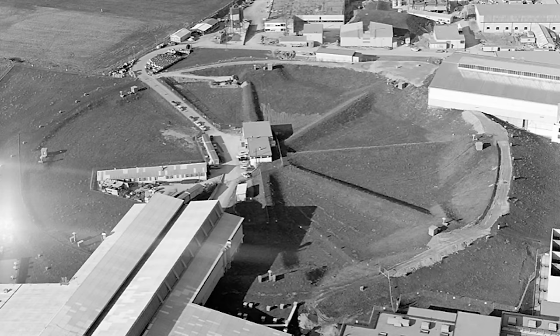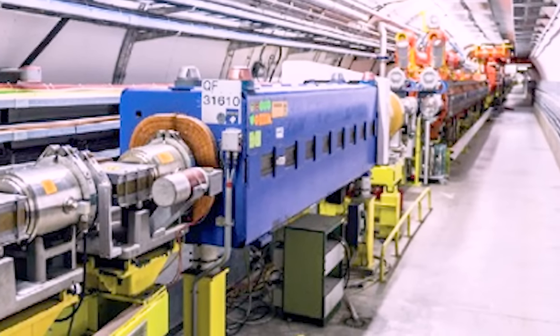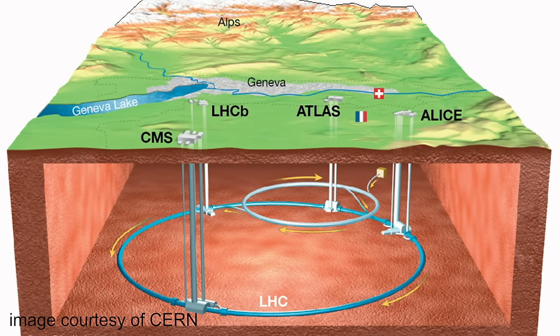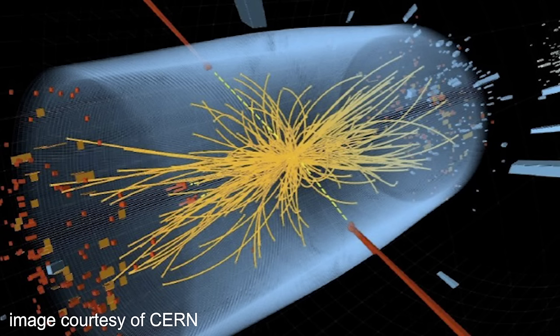Then came the proton synchrotron in 1959, the super proton synchrotron in 1976, and the electron-positron collider, and of course the LHC, the Large Hadron Collider, which was instrumental in providing evidence for the Higgs boson, and validated what we call the Standard Model, which explains the fundamental components of matter.